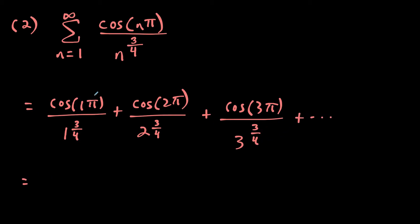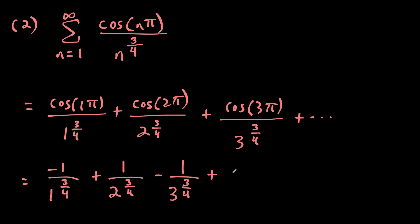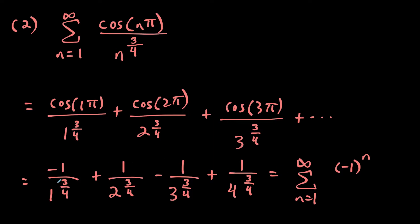Evaluating: cosine of pi equals negative one, so we get negative one over one to the three-fourths, then plus one over two to the three-fourths, minus one over three to the three-fourths, plus one over four to the three-fourths, and so on. We can rewrite this as a new series from n equals one to infinity with negative one to the n on top and n to the three-fourths on the bottom. Notice negative one to the first gives the correct first term.